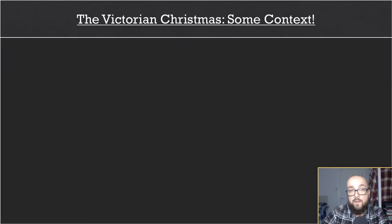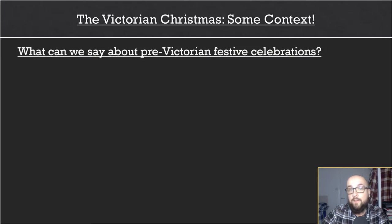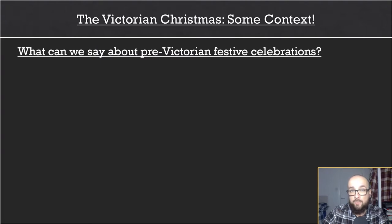First things first, some context. For many of the GCSE exam boards out there, your ability to apply your analysis of A Christmas Carol to its historical, political, or social backgrounds is pretty important. So you need to make sure that you've got a solid understanding of its various contexts. We're going to think about pre-Victorian festive celebrations, because when A Christmas Carol was published in 1843, the Victorian era was less than a decade old.